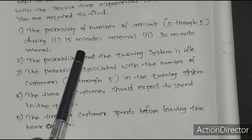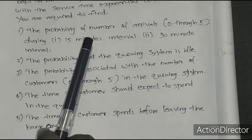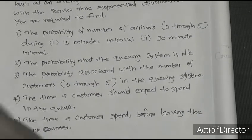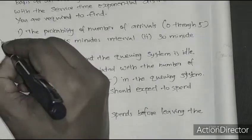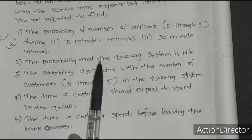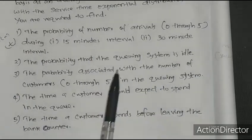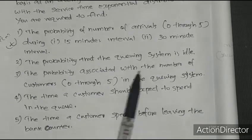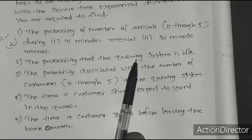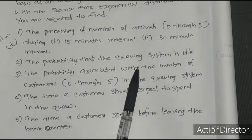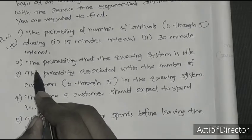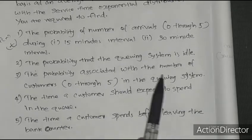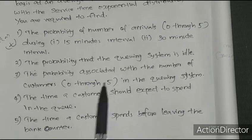The formula is: probability of n customers arriving in time t equals (λt)^n times e^(−λt) divided by n factorial. The second question involves finding the probability that the queuing system is idle, which uses the formula 1 minus lambda divided by mu.